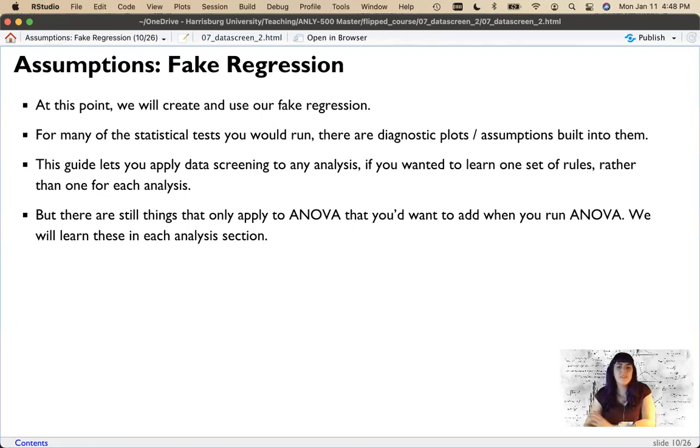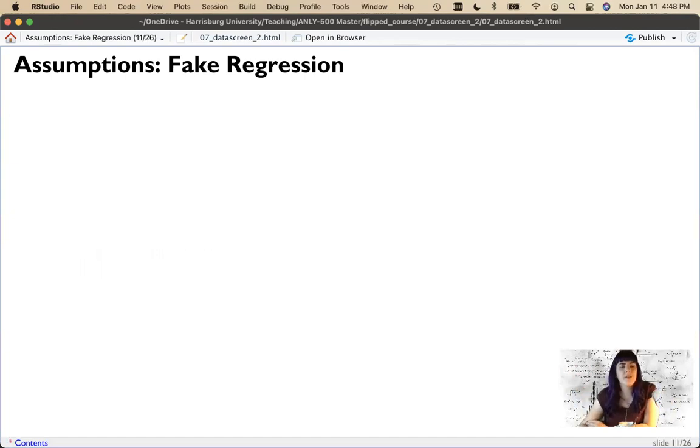That being said, there are specific things that we'll tweak a little bit here and there for each analysis. So when we get to regression, we'll talk more about outliers. That'll be slightly different. When we get to ANOVA, we'll talk about Levine's test. So each one has just a small tweak because of the specific kind of customary procedures for that particular analysis.